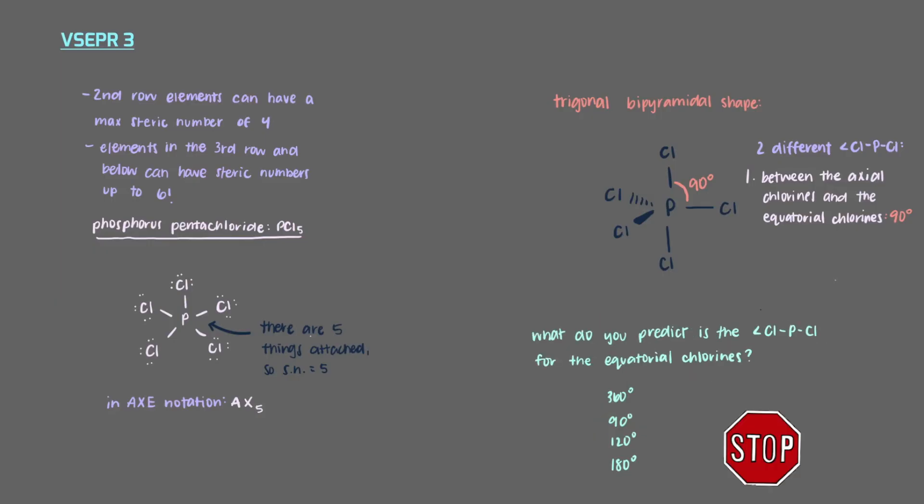What do you predict is the chlorine-phosphorus-chlorine bond angle for the equatorial chlorines? If we ignore the two axial chlorines, this kind of reminds us of the trigonal planar shape that we learned about in the previous video. For the trigonal planar shape, we learned that there is a 120 degree angle between each molecule. The same is true here. Between each equatorial chlorine, there is a 120 degree angle.